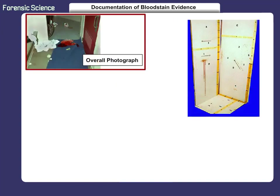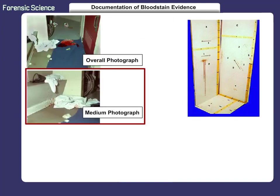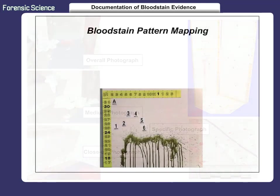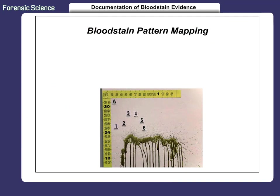The four basic views are overall, medium, close-up, and specific evidence. Photograph all bloodstain patterns and document the entire scene. After you have photographed the bloodstains, you are ready to begin mapping the patterns. Bloodstain pattern mapping is an integral part of scene documentation. It provides an accurate representation of events and establishes pattern data for interpretation by a qualified bloodstain analyst.